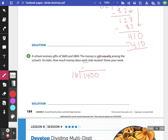16 cannot go into 1. It cannot go into 14. But it can go into 140 eight times, which is 128. I would have 12 left over. Bring down my 0. 16 can go into 120 seven times, which is 112. I would have 8 left over. I can't just say remainder 8.